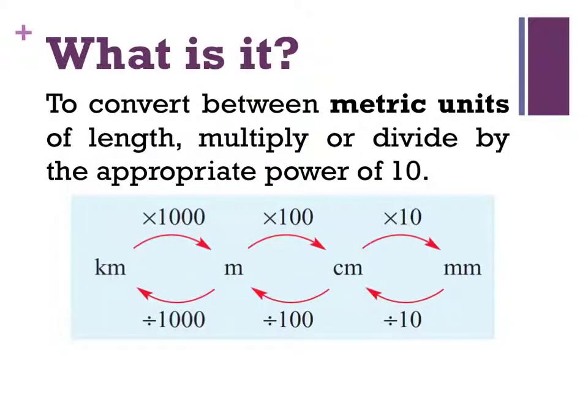To convert between metric units, so in Australia we use the metric system, which means there's millimetres, centimetres, metres, and kilometres. To convert between units of length, we either multiply or divide by the appropriate power of 10. So if I have 2 kilometres and I need to convert 2 kilometres into metres, I take that 2 kilometres and I multiply it by 1000 to give me 2000 metres.